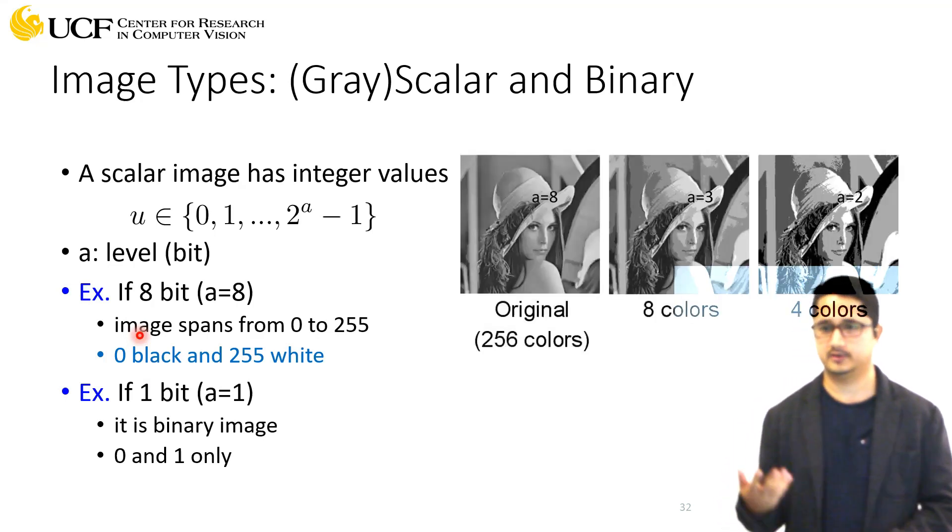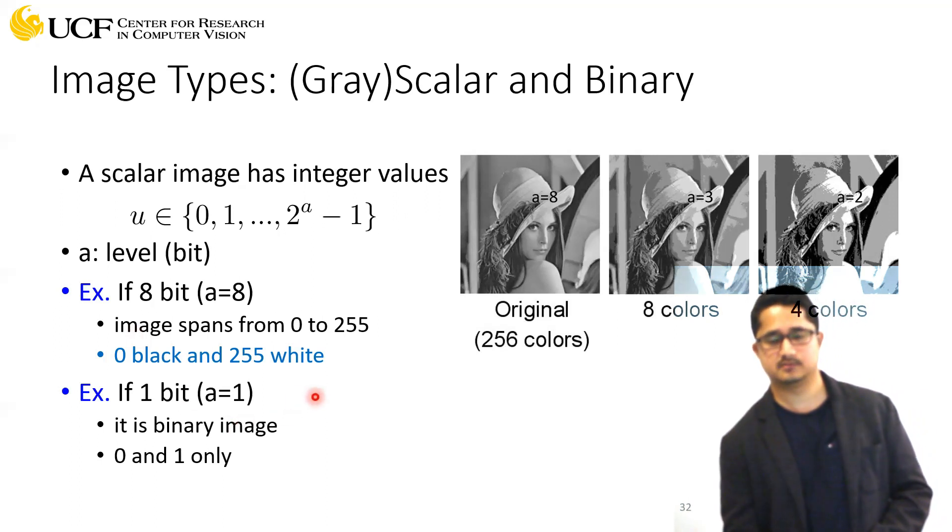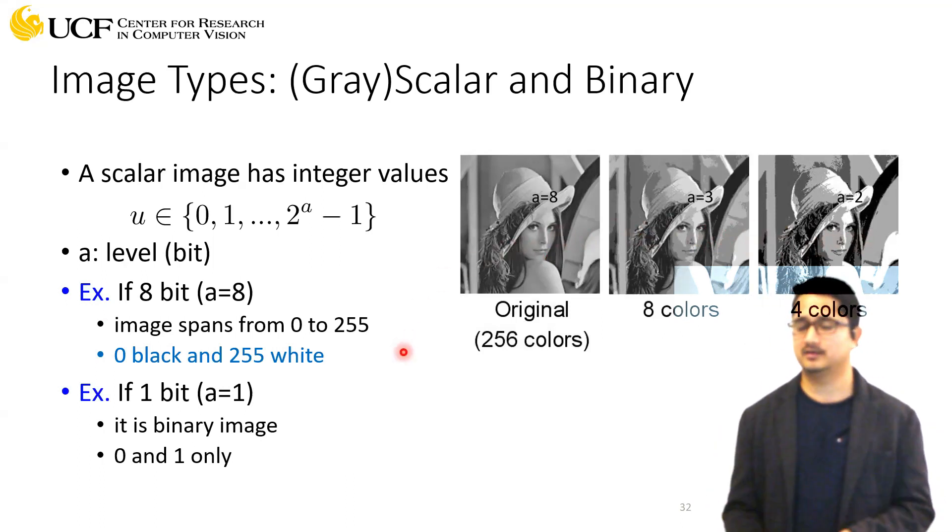Here are some samples—the same image at different bit levels. On the right you can see bit level two, giving four different colors. This is bit level three, and this is bit level eight. With bit level eight there are 256 possible colors, and it's more detailed compared to the other two.